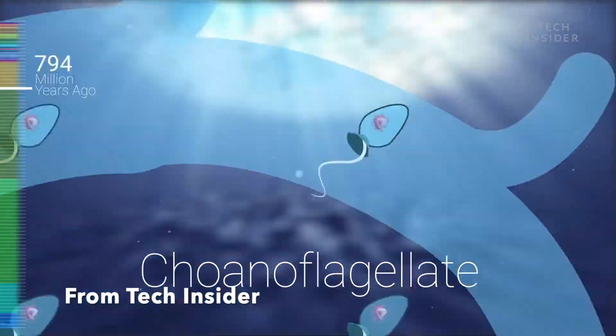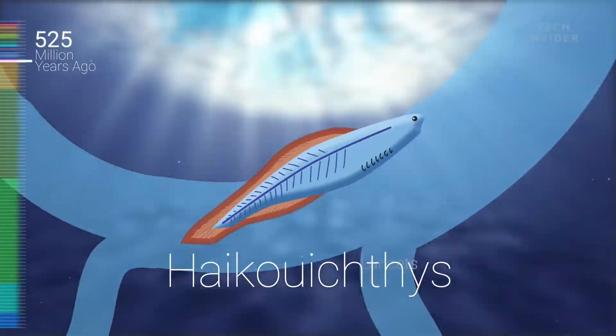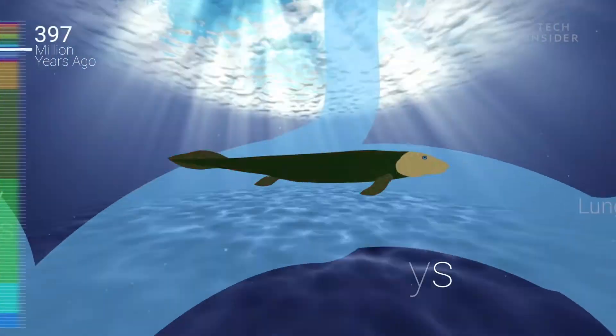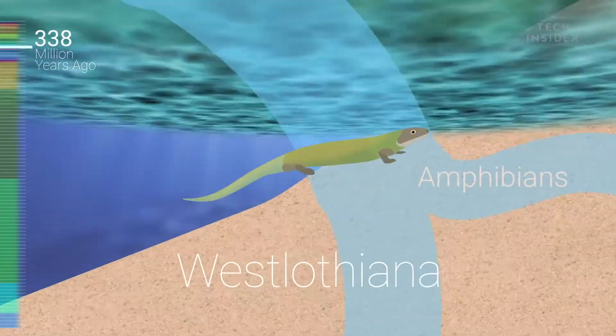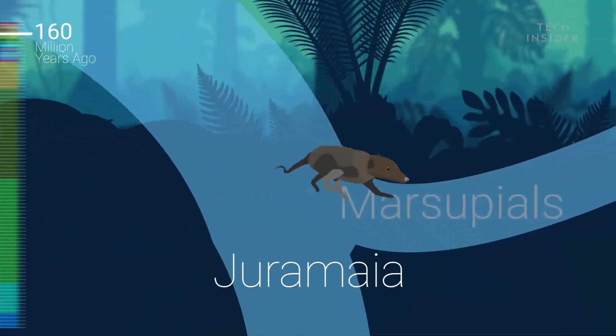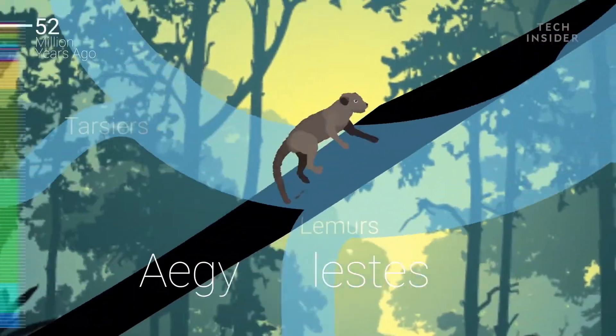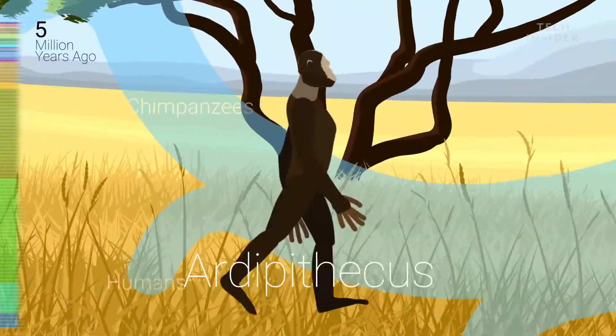Before this, it had been proposed that natural selection was transforming the physical features and behavior of living things to promote the survival of the fittest individual or species. But Dawkins proposed that it was the gene itself that was trying to survive — it was only that its best interest was in surviving with other genes together in the impermanent husk of an individual.